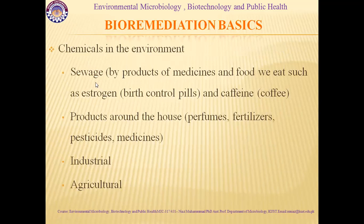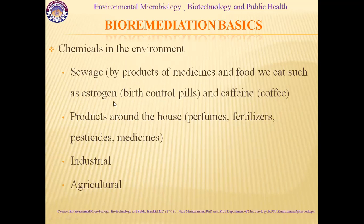Chemicals present in the environment include byproducts of medicines and food we eat, such as estrogen, birth control pills, and caffeine. Products around the house such as fertilizers, pesticides, and medicines, as well as industrial waste and agricultural waste, are mostly present in the environment. All these things must be biologically remediated because they are pollutants that survive in the environment for a long time and can cause negative impacts on ecological systems.